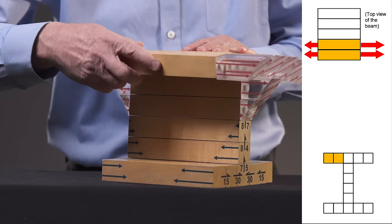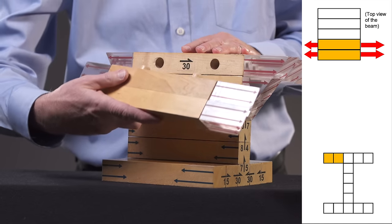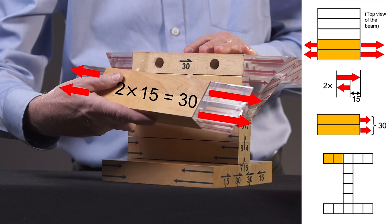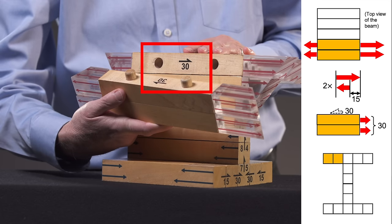If we now imagine a cut that removes two fibers of the flange, that pair will be out of balance in the axial direction by twice as much as the single fiber we originally considered. So, to keep this new free body in equilibrium, a shear force of 30 units must act, as shown by these arrows.